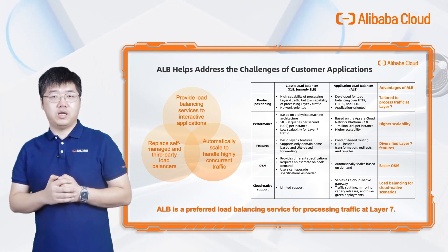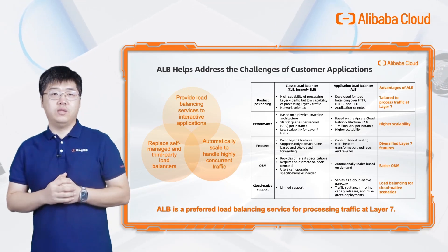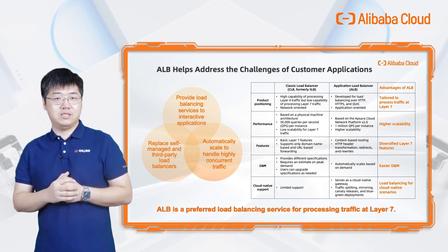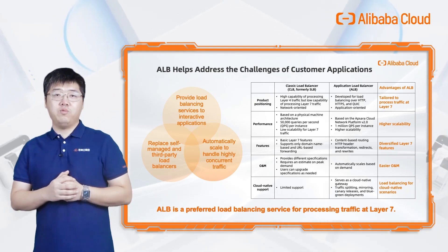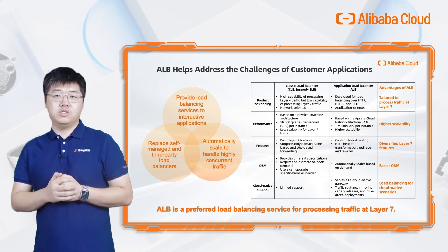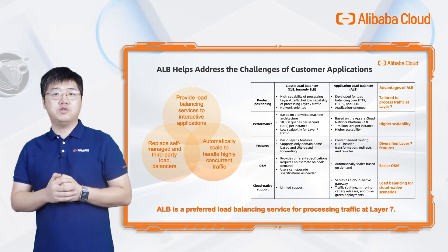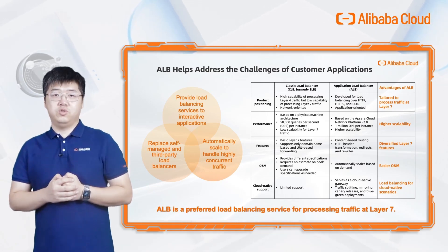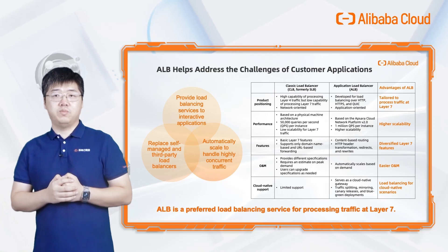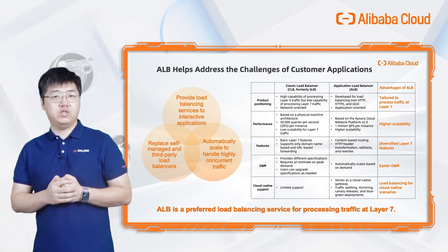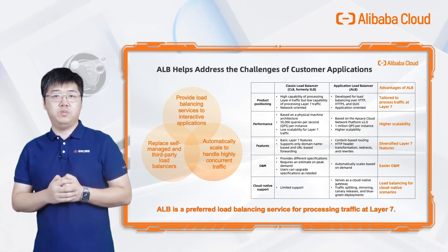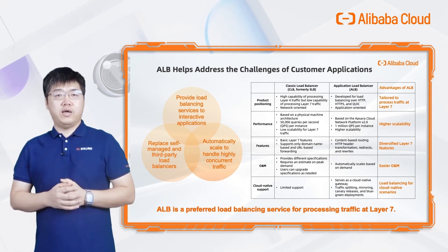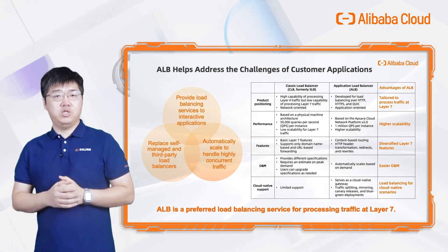Compared with the classic load balancer, formerly known as Server Load Balancer, Application Load Balancer has many advantages. It is tailored to process traffic at Layer 7, supporting a wide range of application protocols such as HTTP, HTTPS, QUIC, WebSocket, and more. It offers much higher scalability, with up to 1 million QPS per instance.